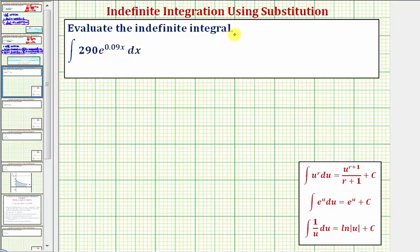We want to evaluate the indefinite integral or determine the antiderivative. To find our antiderivative, we'll be using the integration formula given here below, where the integral of e to the u integrated with respect to u is equal to e to the u plus c.